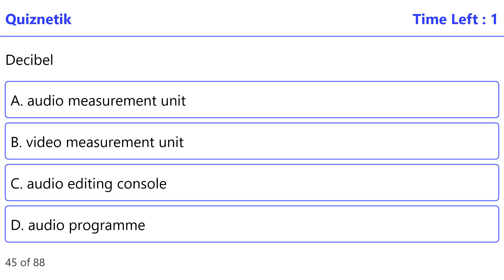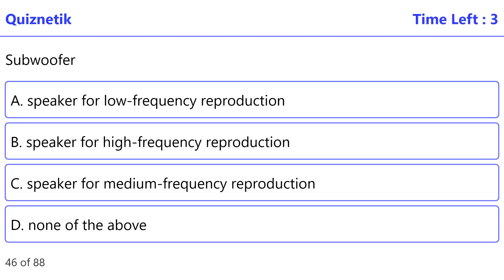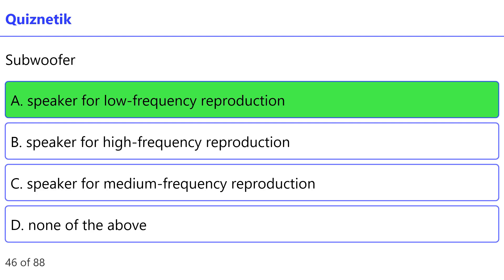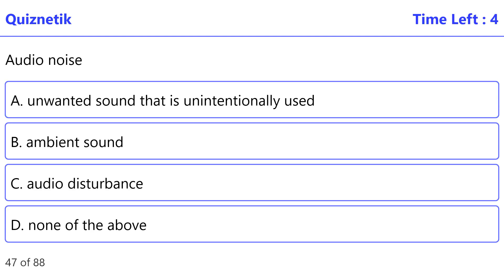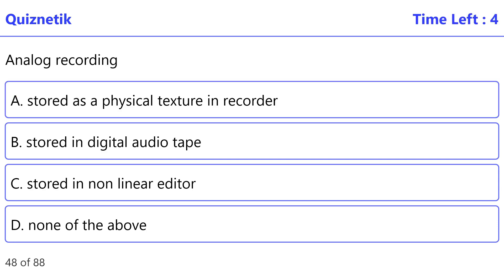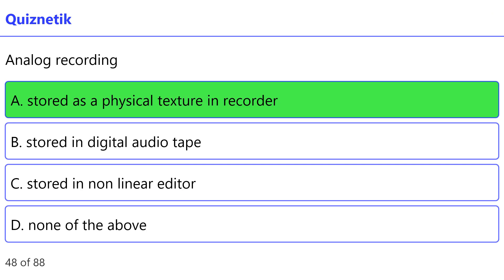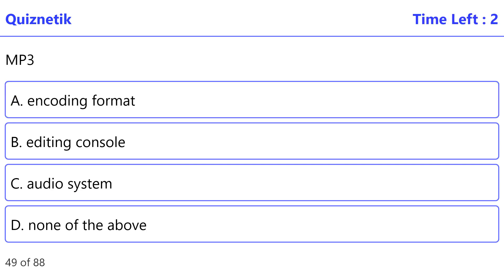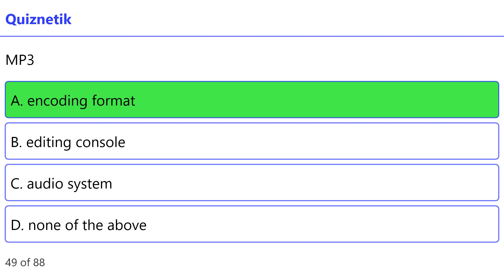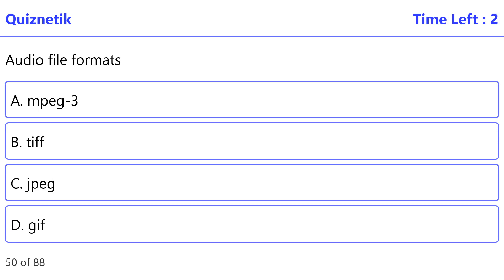Audio measurement unit: correct option is A. Subwoofer: correct option is A — speaker for low frequency reproduction. Audio noise: correct option is A — unwanted sound that is unintentionally used. Analog recording: correct option is A — stored as a physical texture in recorder. MP3: correct option is A — encoding format. Audio file formats: correct option is A.